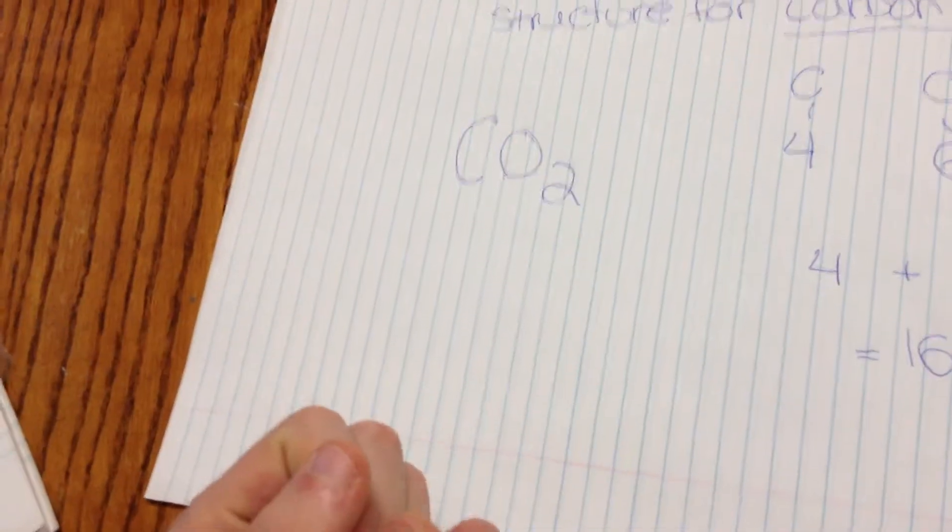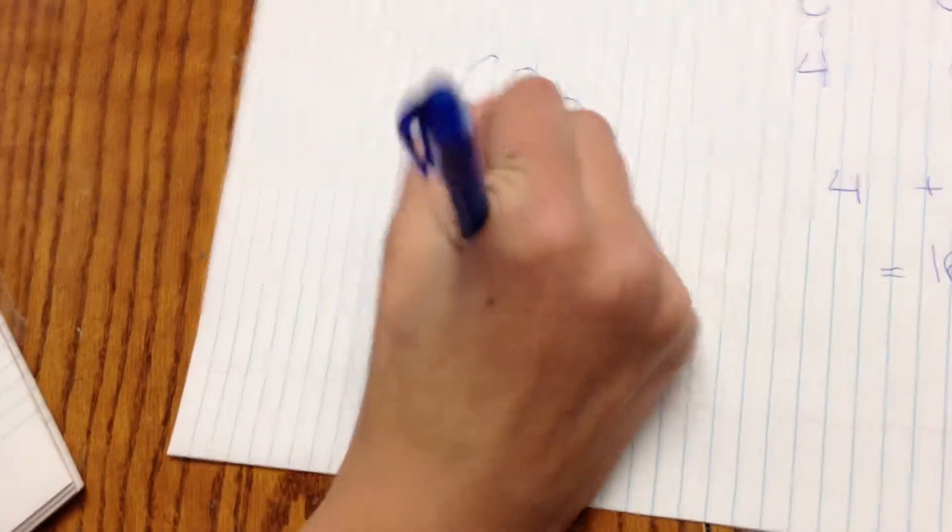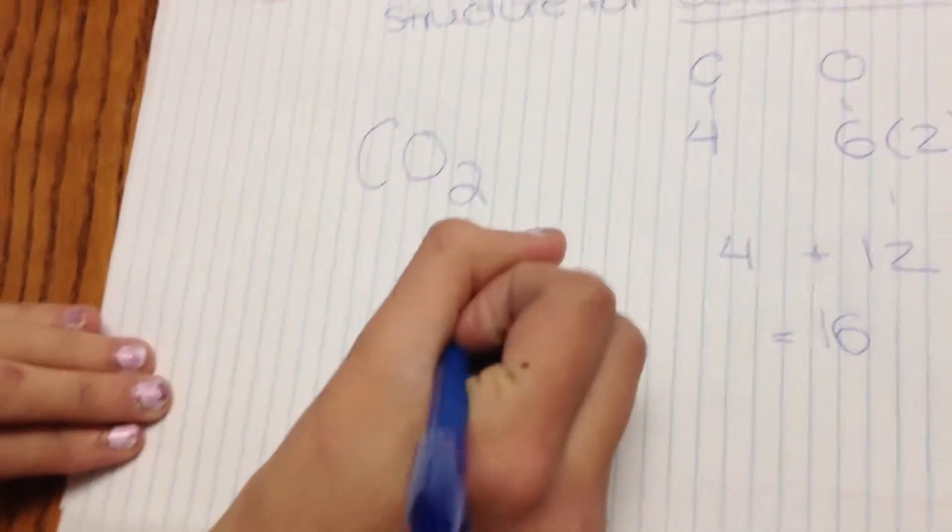Okay, now you start drawing the Lewis structure. Now because of the periodic table of elements, you need to always have carbon in the middle. Then you would have oxygen on either side, connected by two sets of valence electrons.